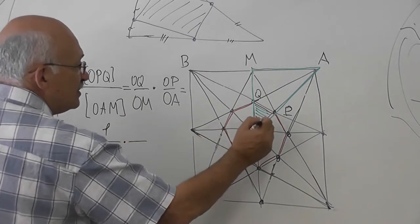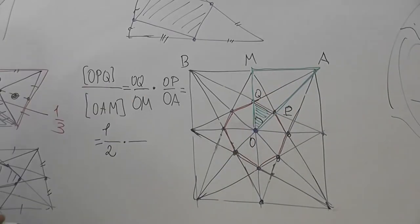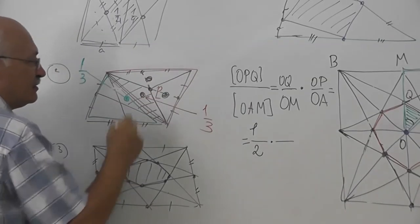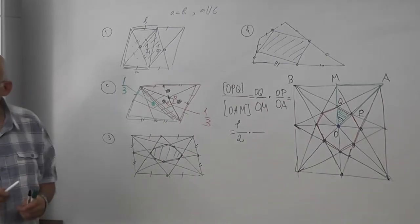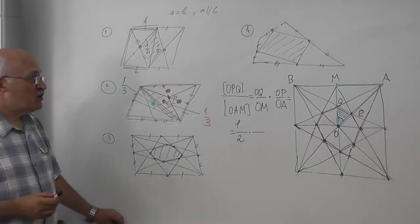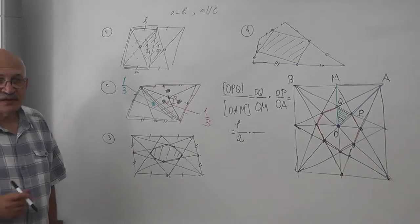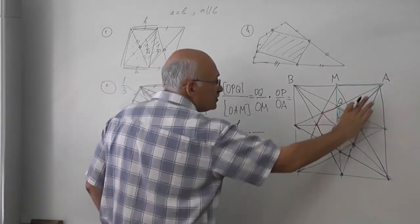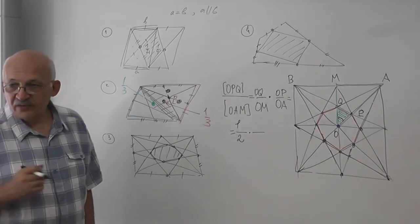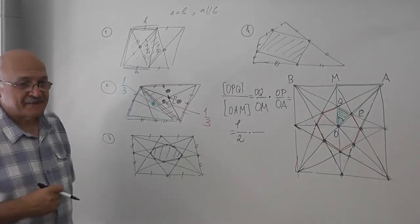Now OP to OA. So what do we know about this point? Can we still do that? Yes. The same word. So therefore OP to OA is one to three. OP to OA. Look at the figures. OP to OA. One to three.